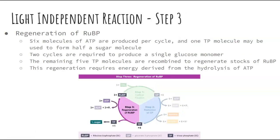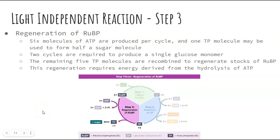The third and final step is the regeneration of RuBP. We want to get back to the beginning — this is a cycle called the Calvin cycle. Six molecules of ATP are produced per cycle, and one TP molecule may be used to form half a sugar molecule. Two cycles of this entire process are required to produce a single glucose.